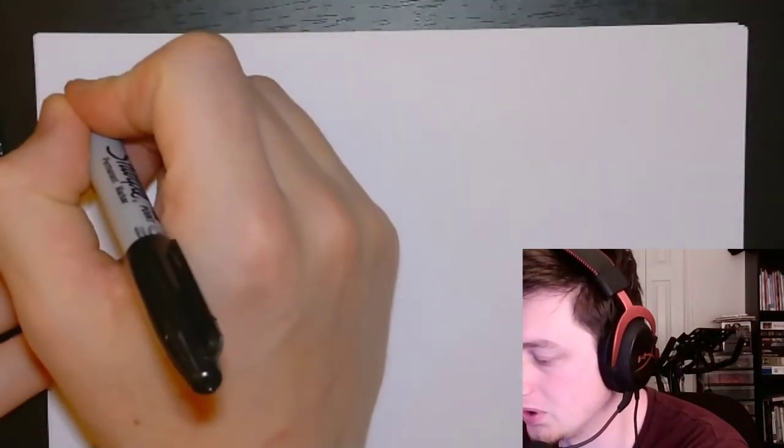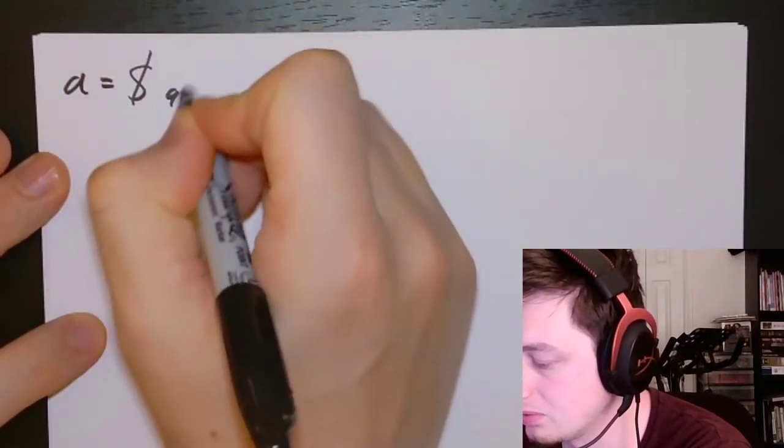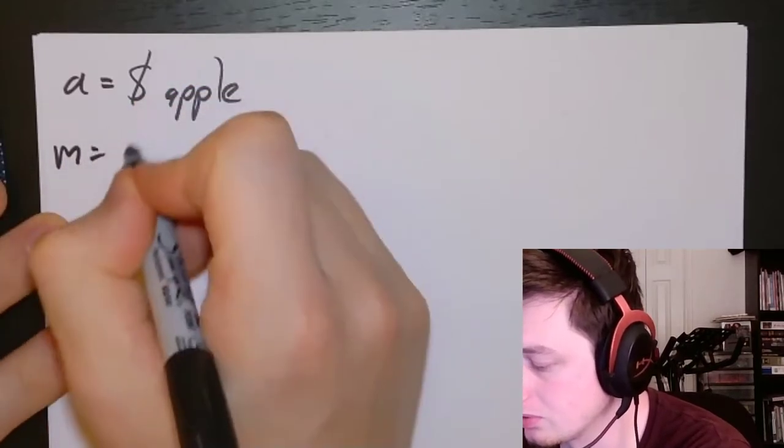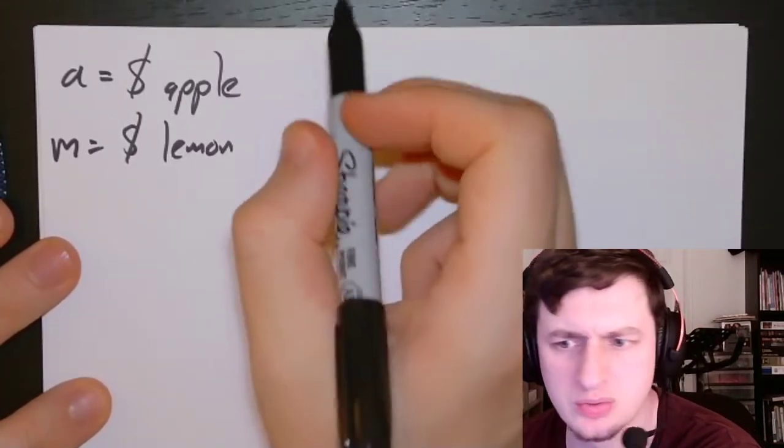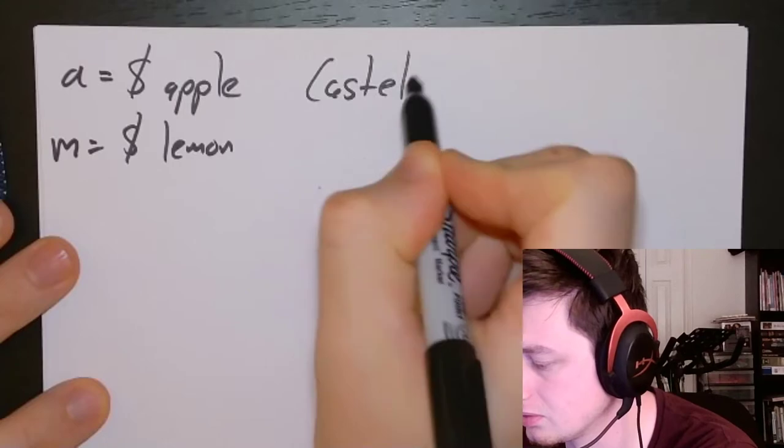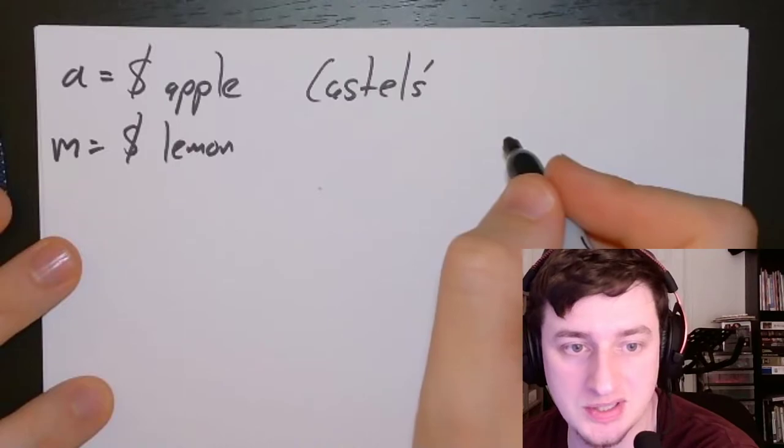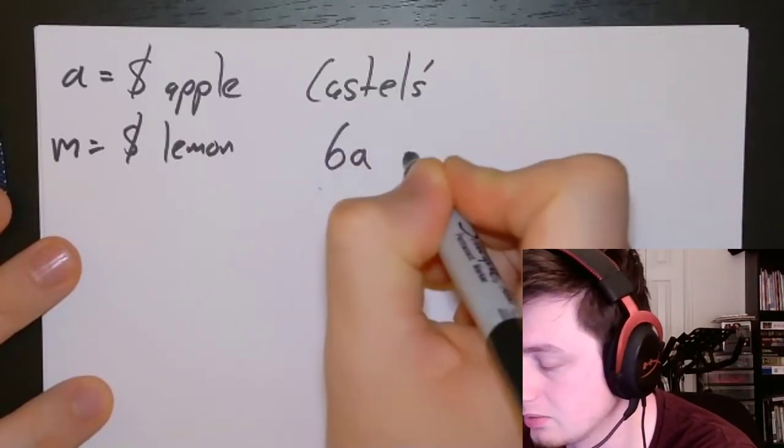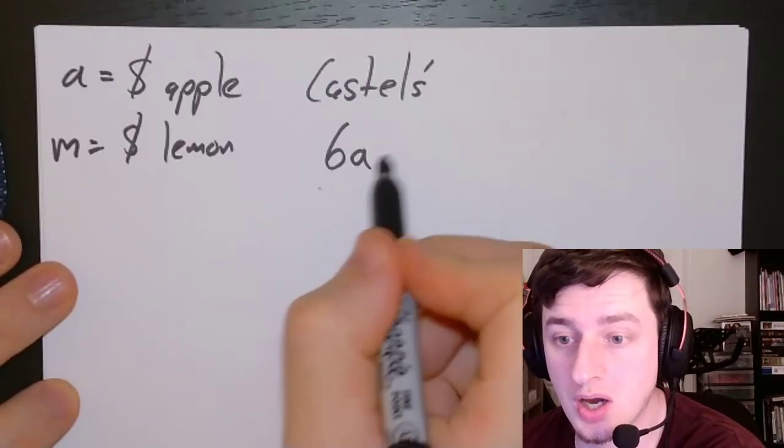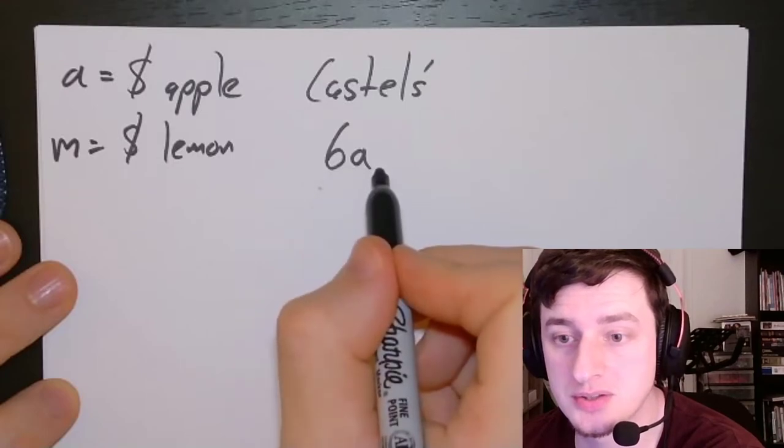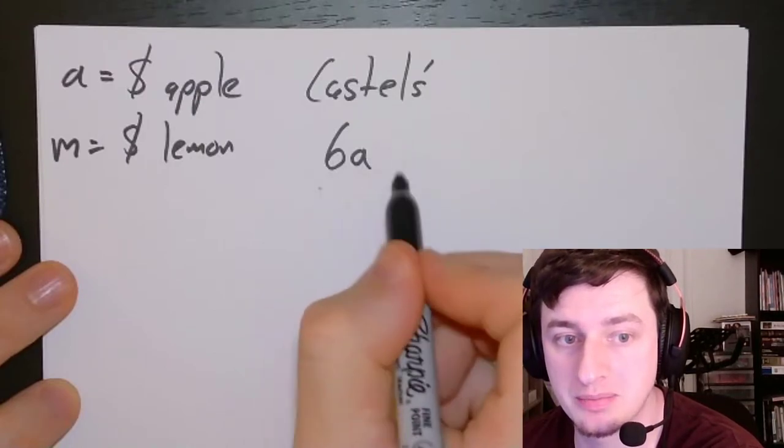On my piece of paper here, we're doing A for apple, so this is the cost of apple, and M for the cost of lemon. Those are our two variables, and we're going to do Castel's equation first. His was 6 apple pies, so 6A. This is going to be 6 times A, which is the cost. A is the cost of the apple pie.